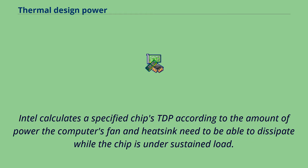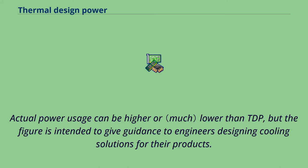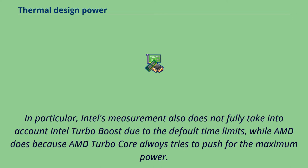Intel changed this practice with the introduction of its Conroe family of processors. Intel calculates a specified chip's TDP according to the amount of power the computer's fan and heat sink need to be able to dissipate while the chip is under sustained load. Actual power usage can be higher or lower than TDP, but the figure is intended to give guidance to engineers designing cooling solutions. In particular, Intel's measurement does not fully take into account Intel Turbo Boost due to the default time limits, while AMD does because AMD Turbo Core always tries to push for the maximum power.